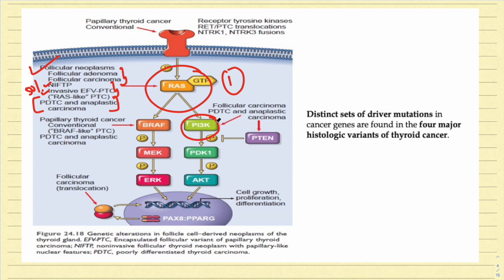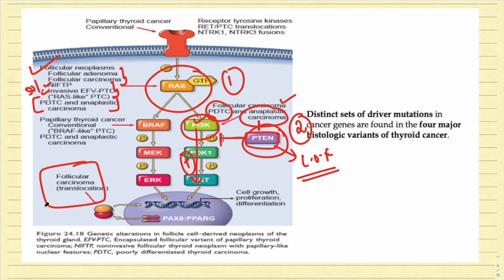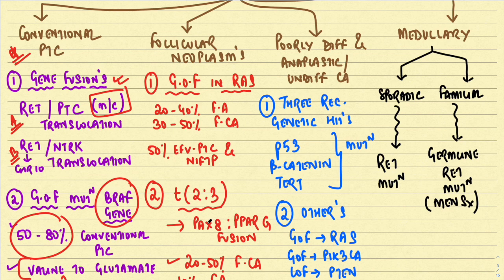Another important mutation in follicular carcinoma is a gain-of-function mutation in the PI3K gene, stimulating the growth and proliferation pathway. The tumor suppressor gene PTEN normally inhibits the PI3K/AKT pathway. In follicular neoplasms, there is a loss-of-function mutation in the PTEN tumor suppressor gene, causing this pathway to go unchecked. This mutation is present in follicular carcinoma as well as in poorly differentiated and anaplastic carcinomas. A third mutation highly selective for follicular carcinoma is the PAX8/PPARG fusion, which occurs at the nuclear level.